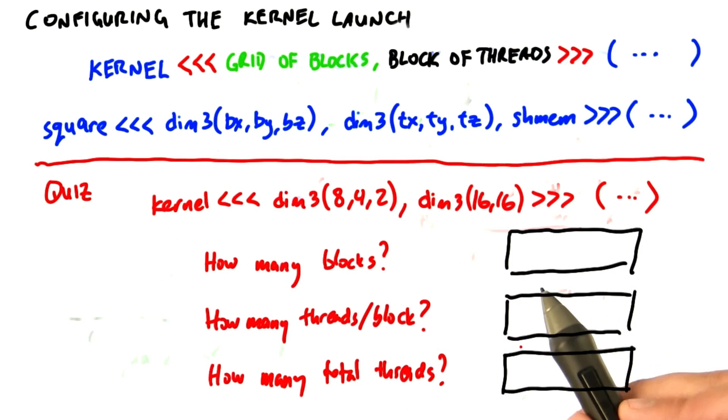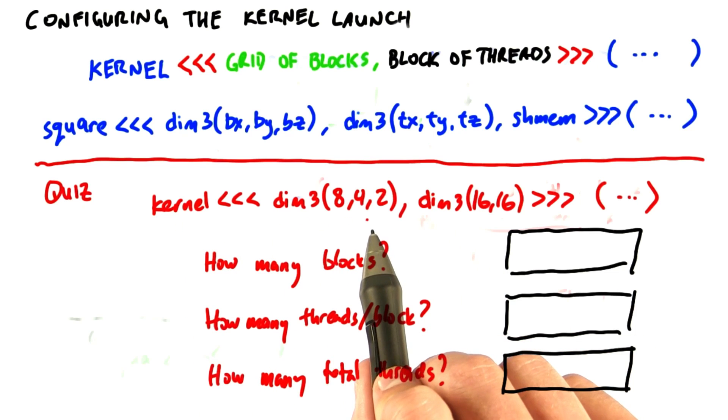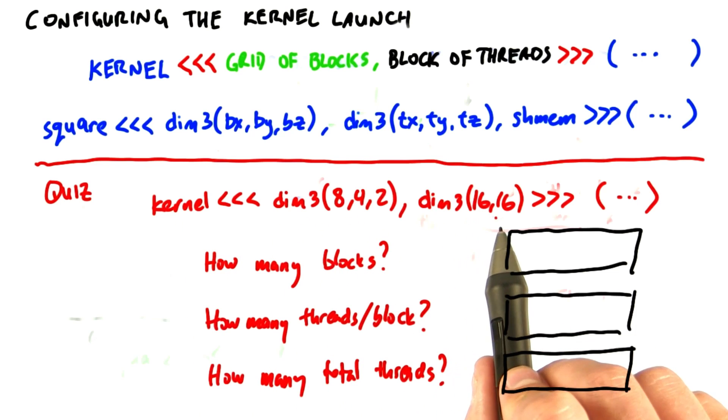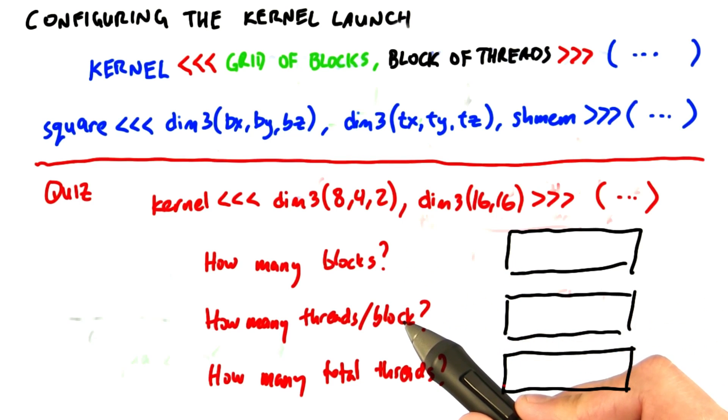Let's wrap up with a little quiz. Say I launch the following kernel: kernel with two parameters, dim3(8,4,2) and dim3(16,16). How many blocks will this call launch? How many threads per block? And how many total threads?